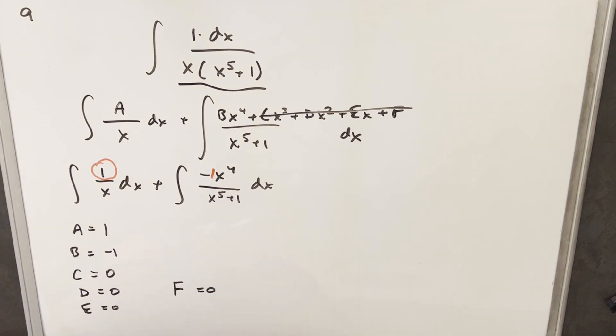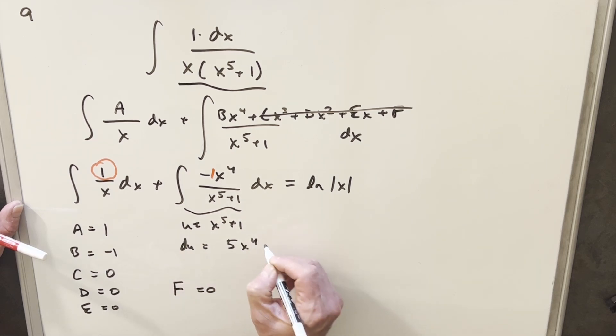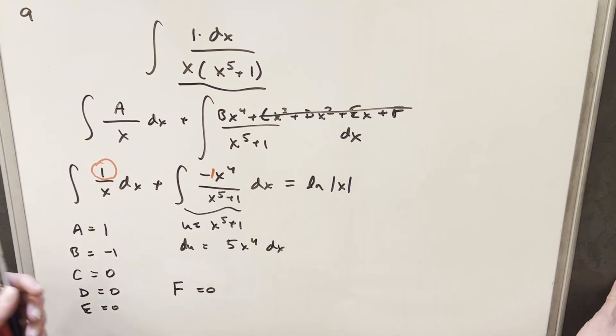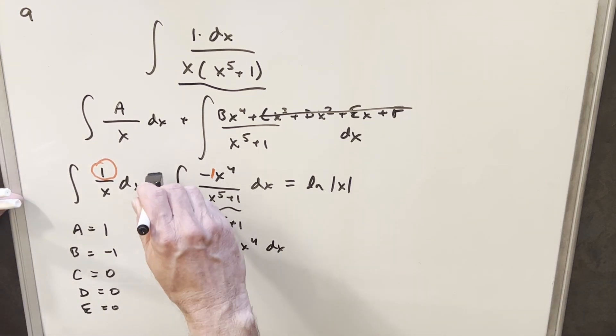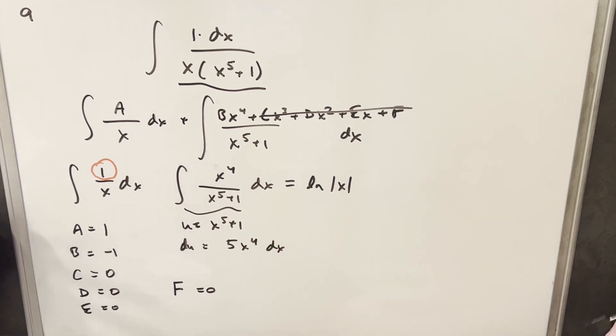And then this is going to be really easy to integrate, actually. So the first one, dx over x is just going to be natural log absolute value x. For this guy, we can do a u substitution. I'm going to call my u equal x to the fifth plus one. Then du is going to be five x to the fourth dx. And what I'm going to do here, I'm just going to kind of do this on the fly. I'll take that minus sign. I'm just going to bring it out front.